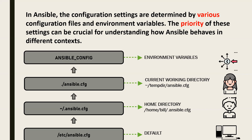There can also be a requirement where someone has placed a configuration file at an accessible location that is none of the ones we discussed. Using the environment variable ANSIBLE_CONFIG, a certain file can be pointed to, and it will override the common settings provided by the other three files. One important thing to note: a priority will only be overwritten if the specific key value is found inside more than one file. If a specific key is not present in a higher-priority file, Ansible will look in the lower-priority files for its value.